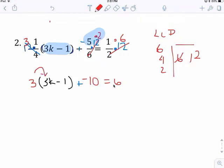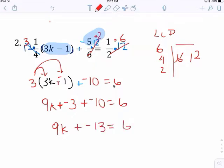Distribute. 9k. Distribute. Distribute. Negative 3. Add negative 10. 9k. Plus negative 13. Equals to 6.